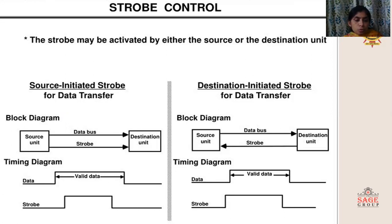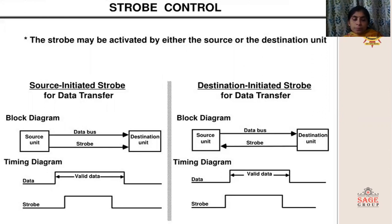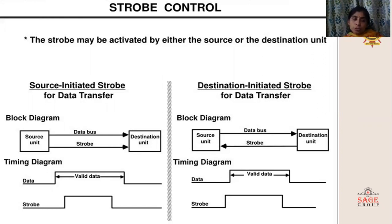This is the block diagram of source-initiated strobe. Here there is one source unit and one destination unit, and two buses are connected between them: the data bus and strobe. The data bus is used to carry the data from the source unit to the destination unit. After sending the strobe pulse from the source unit to the destination, it means that the valid transmission of data has started towards the destination unit.